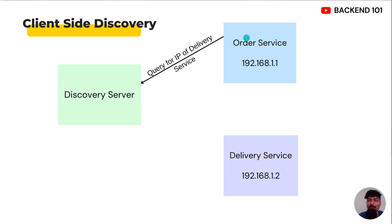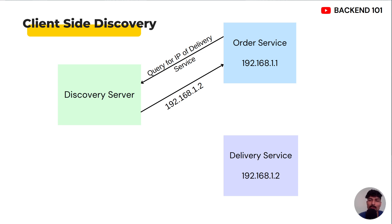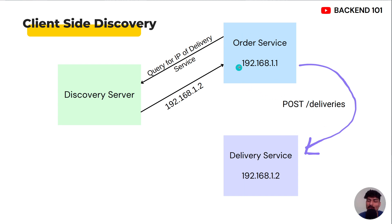In client-side discovery, whenever order service wants to communicate with delivery service, it first queries the discovery server for the IP address of delivery service. The discovery server returns the IP address, and order service then makes the request directly to delivery service. Since order service is the client doing the major tasks — querying the IP and making the request — this process is known as client-side discovery.